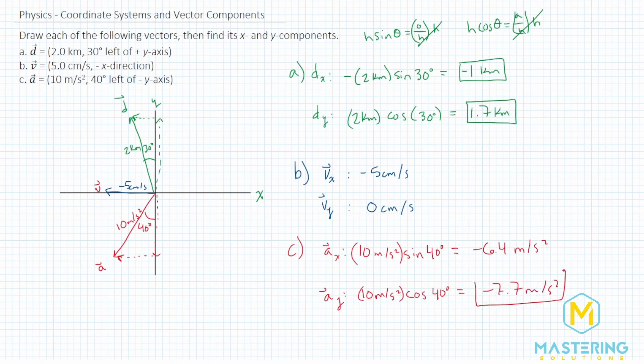So here are all the x and y components for the three vectors a, v, and d, and we have the drawn vectors right here on our graph.